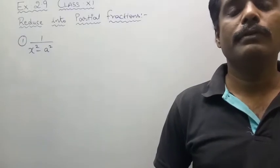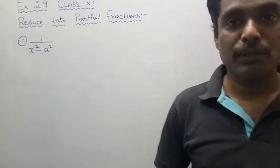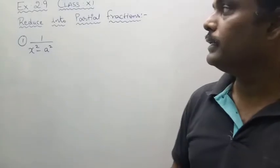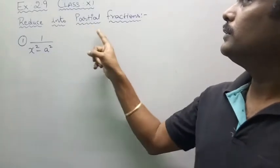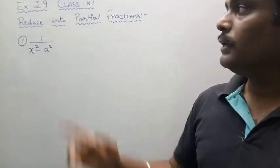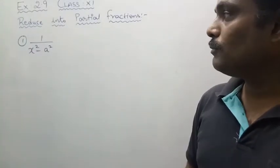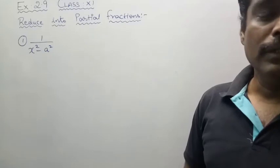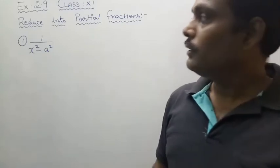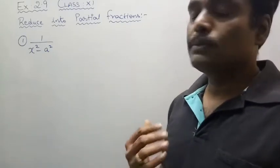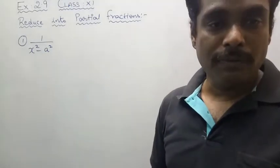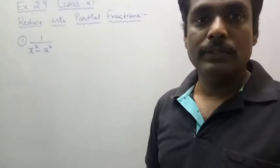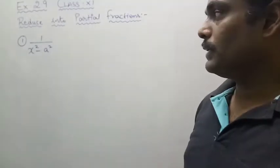Hi dear students, today we will discuss Chapter 2, Basic Algebra, Exercise 2.9 - Reduce into Partial Fractions. We have question number 1: 1 divided by x squared minus a squared. When you see the denominator, if it is possible to factorize, you want to factorize in the very first step.